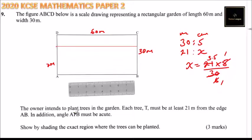Again, we are told that angle ATB must be acute angle. So it means where the trees are, that is if you draw a line here and come here, that angle should be acute. Now, how do we identify that region?